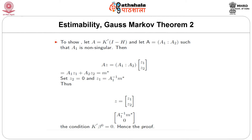We need to choose z such that k-transpose beta-naught equals m. Let A equal k-prime (I minus H), and partition A as [A1, A2] with A1 non-singular. Then A z equals A1 z1 plus A2 z2 equals m-star. Set z2 equal to 0 and z1 equal to A1-inverse m-star. With this choice of z, the condition k-prime beta-naught equals m is satisfied, completing the proof of the theorem.